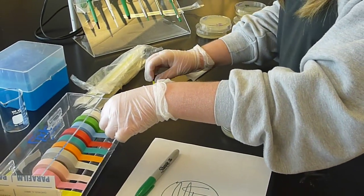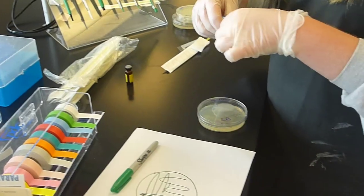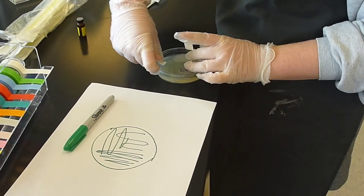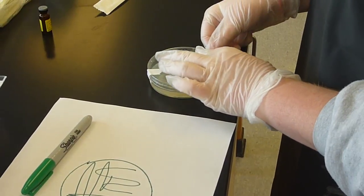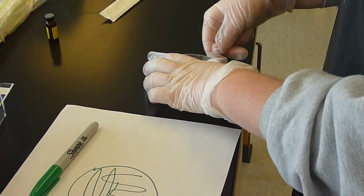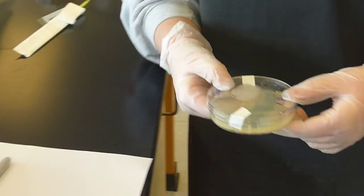And so this petri dish now is going to be sealed with a little piece of tape on both sides. So she's going to tape the top to the bottom. Excellent. Now, if this dish, once the E. coli grows up, this could be stored in the refrigerator, and then you'd want to use parafilm.